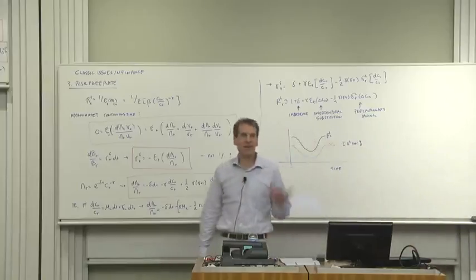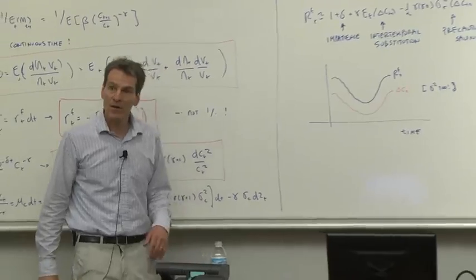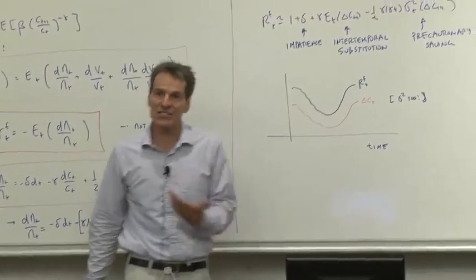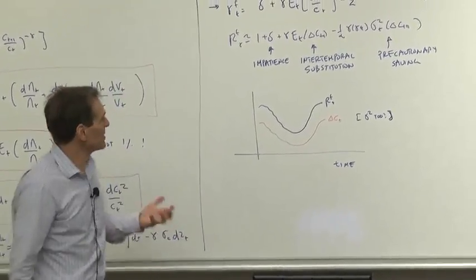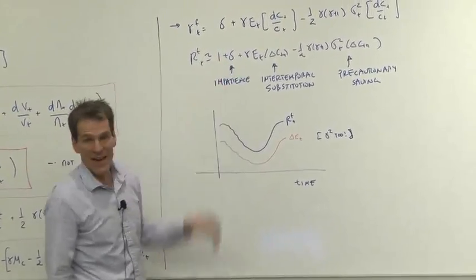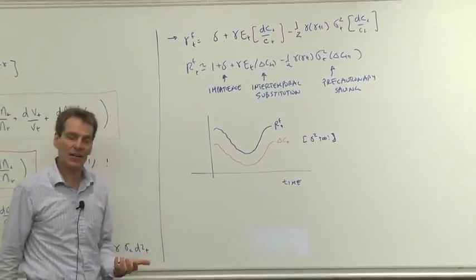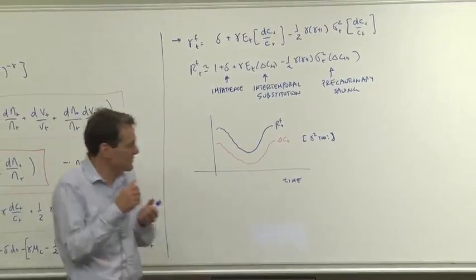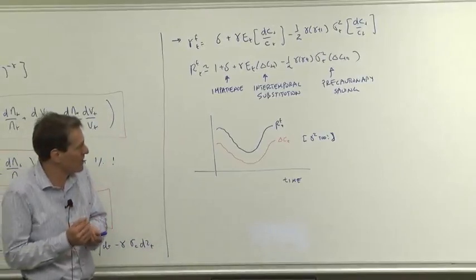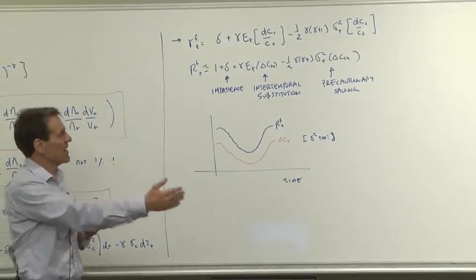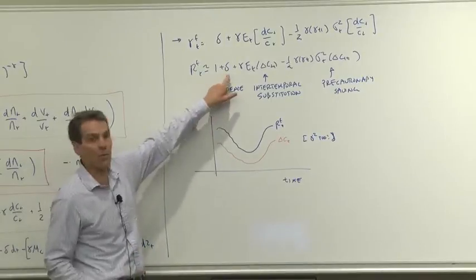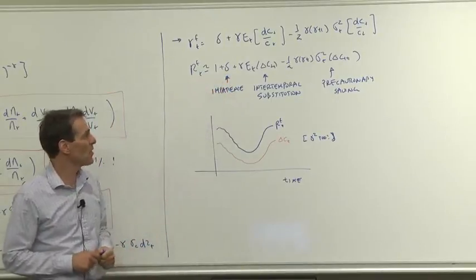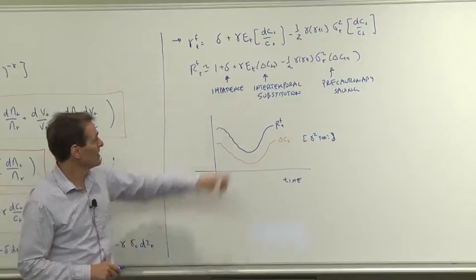We have here a theory of where interest rates come from. What makes interest rates go up or down? Well, first, delta, impatience. If you live in an economy where people are more impatient, interest rates are going to be higher. Interest rates are about what does it take to get people to save some of their income, not consume it all today, and consume some tomorrow? Well, if people are more impatient, you have to pay them a higher interest rate to consume tomorrow rather than today.